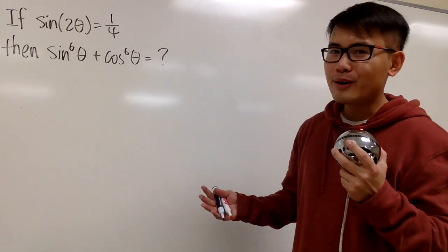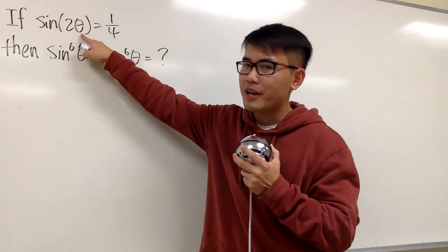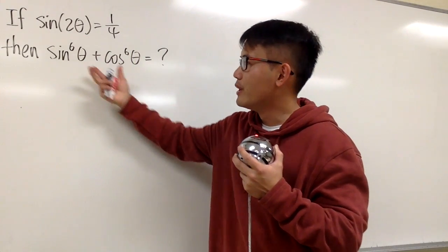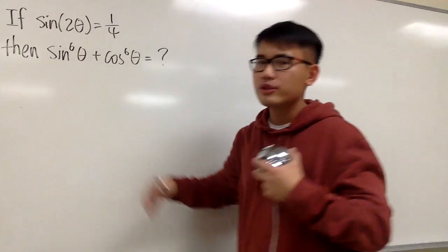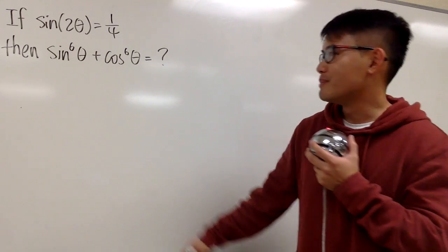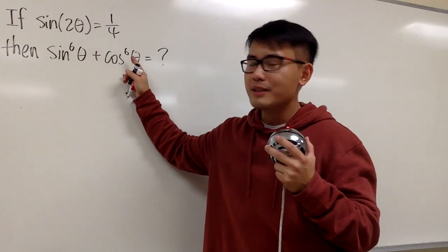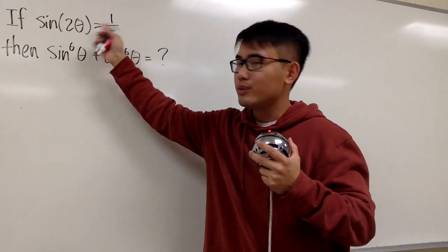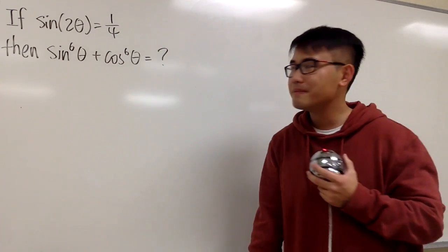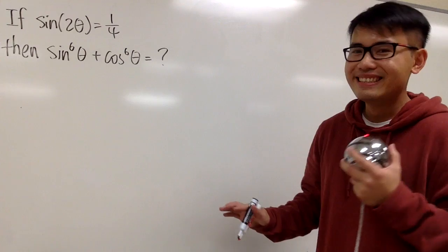Is it possible — or maybe I should ask, is it easy to solve for θ right here, and then plug in the θ value into this expression and work it out? I don't think so, right? First, because we have the 6th power here, and second, if you do want to do that, θ is not going to be a nice value. So let's not do it like that.